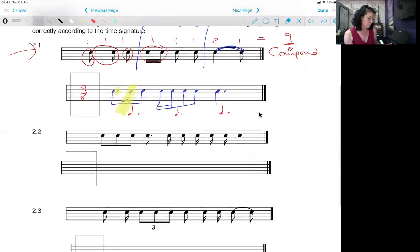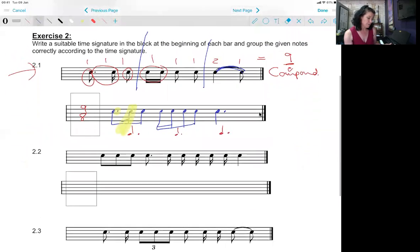Okay, another example. The first step is to determine the number of quavers. In this case we've got one, one, one, one, one, one, one and two. In total therefore we've got nine quavers. This is again nine quavers in a bar and we are dealing with compound time.